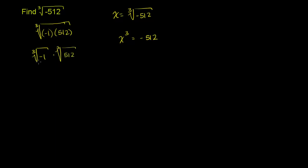And this one's pretty straightforward to answer. What number, when I raise it to the third power, do I get negative 1? Well, I get negative 1. This right here is negative 1. Negative 1 to the third power is equal to negative 1 times negative 1 times negative 1, which is equal to negative 1. So the cube root of negative 1 is negative 1. So it becomes negative 1 times this business right here, times the cube root of 512.